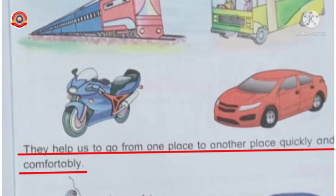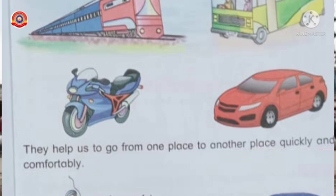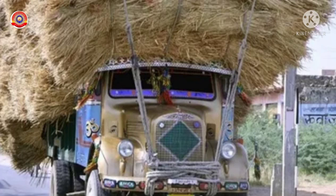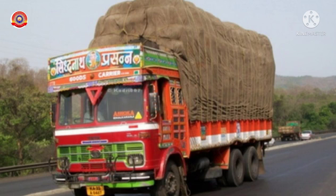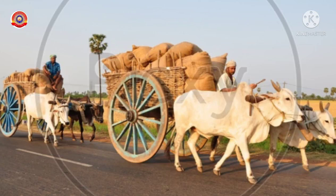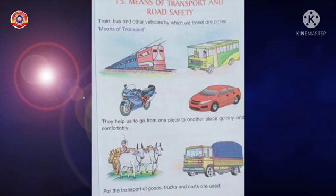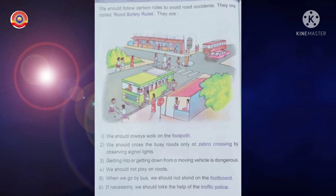These vehicles help us to go from one place to another place very quickly and comfortably. We can also transport goods from one place to another place. Vehicles like trucks, cars, and goods trains are used to transport goods from one place to another place. Have you understood about transport? Okay, so let's move on to our next topic.